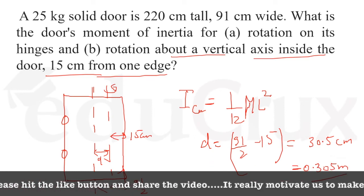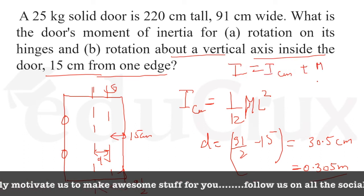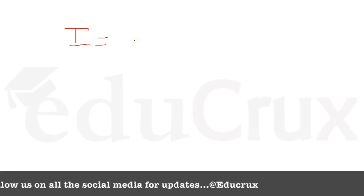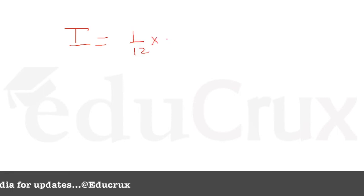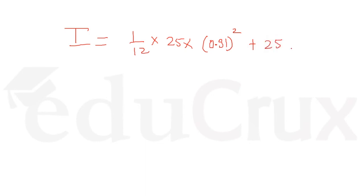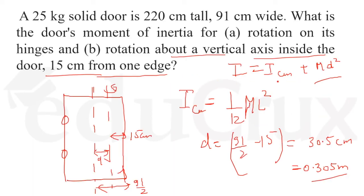Using the parallel axis theorem: I = I_cm + m×d². So I = 1/12 × 25 × (0.91)² + 25 × (0.305)². When we calculate the whole thing, it comes out as 4.1 kg·m².